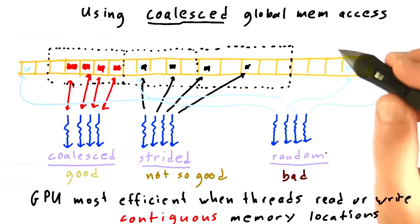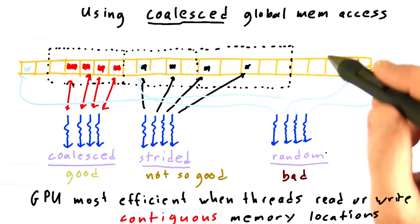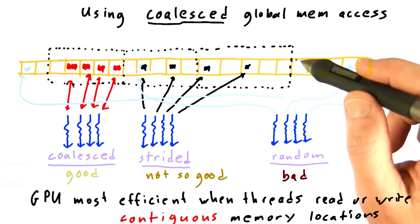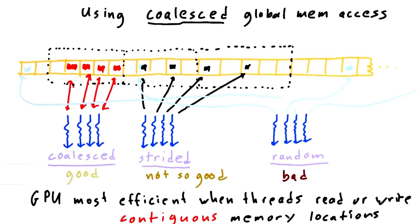So we'll talk more about memory optimizations later. For now, just know that global memory is going to be fastest when successive threads read or write adjacent locations in a contiguous stretch of memory.